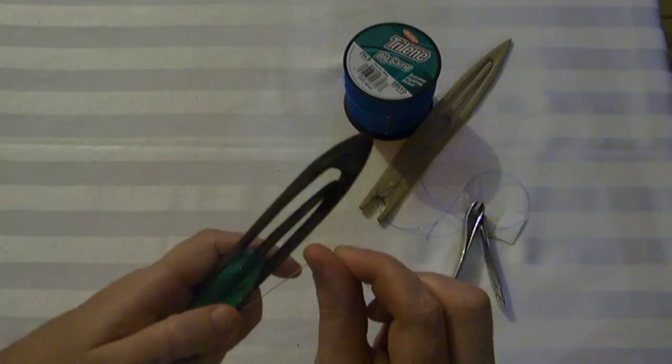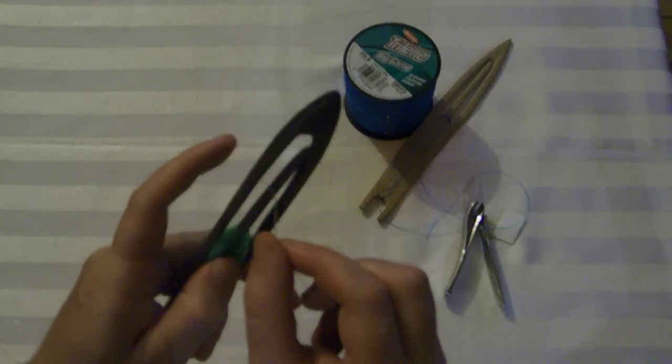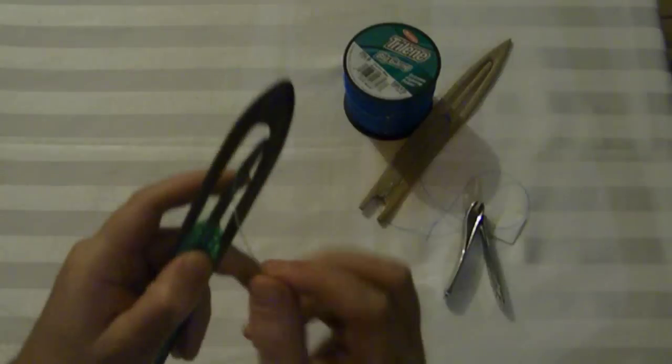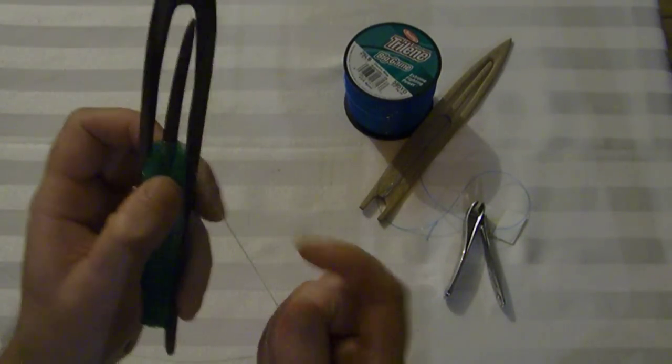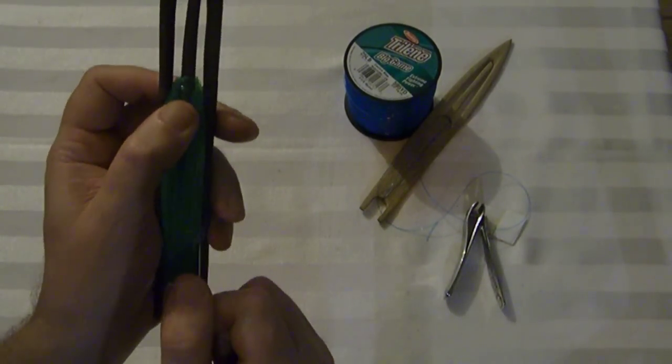So what you do is go around and you put this loop through and grab it with this finger here. Then you can push down while you're pulling tight.